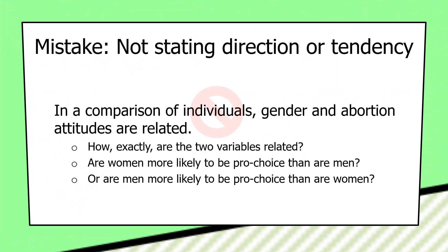Another mistake is not stating direction. Hypotheses and the explanations they're derived from have direction — the independent variable causes the dependent variable in a particular way. A defective hypothesis would be: 'In a comparison of individuals, gender and abortion attitudes are related.' That doesn't say how they're related. Are women more likely to be pro-choice than men, or vice versa? Always clearly state a direction.